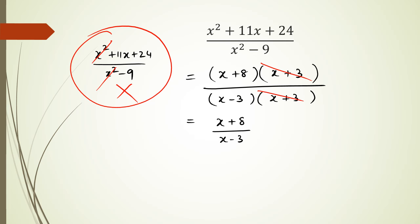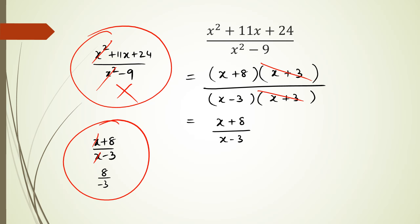Some people then look at (x plus 8) over (x minus 3) and say 'x and x cancel out,' writing the answer as 8 over negative 3 — that is incorrect. Remember, you can only cross out things if they're being multiplied. In this case the multiplication sign is between the two brackets, which is why we could cancel the brackets. That's it for this session — any questions, pop them in the comments, and thanks for watching.